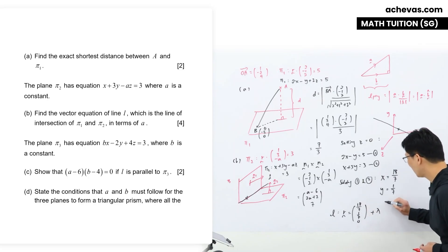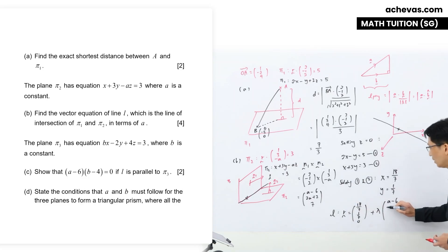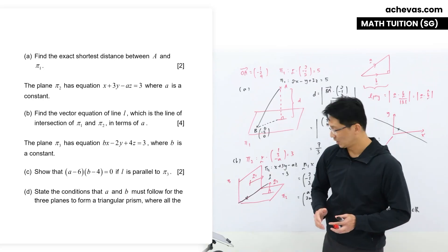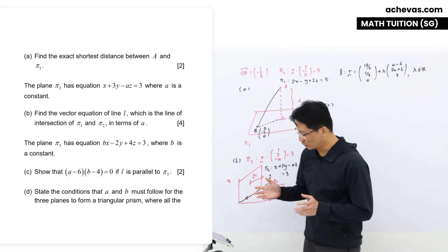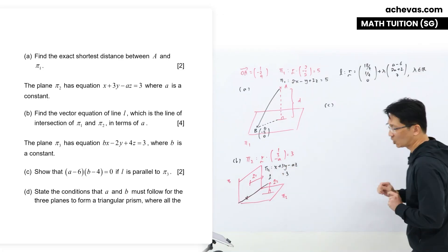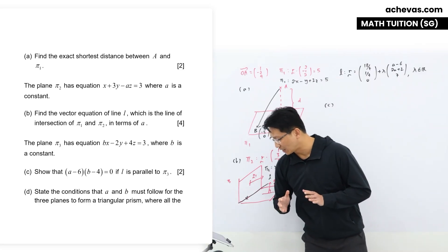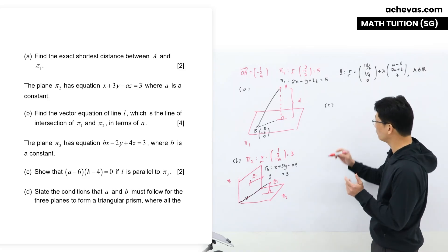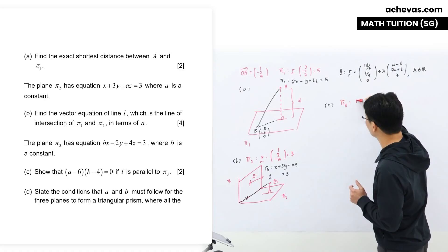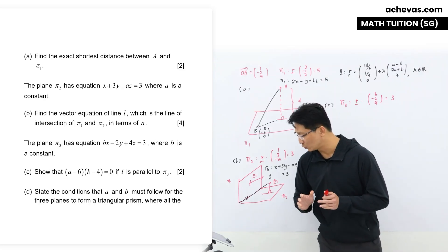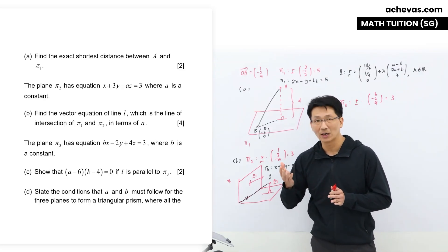With this information, the vector equation of the line of intersection is: r = (18/7, 1/7, 0) + λ(-6, 2a+2, 7), where λ ∈ ℝ. This is the answer for part B. For part C, we are given another plane π₃: bx - 2y + 4z = 3, which in scalar dot product form is r · (b, -2, 4) = 3.